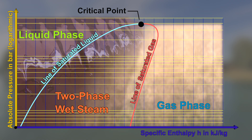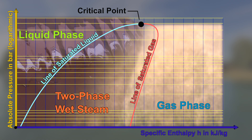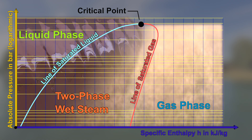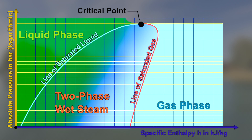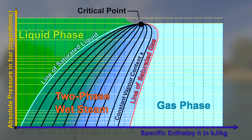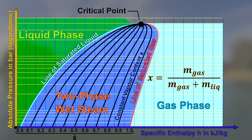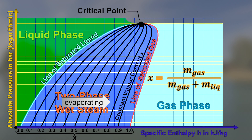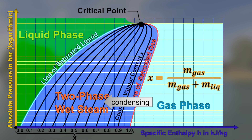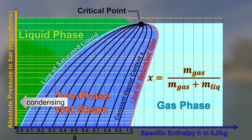If the fluid consists of a single component, the state in this domain is a mixture of a saturated liquid and a saturated gas in thermodynamic equilibrium with each other. In the left part, most of the fluid is liquid and only a small amount is gaseous. In the right part, most of the fluid is gaseous and only a small amount is liquid. Lines of constant vapor content x are indicated in the two-phase area. The vapor content x is the mass ratio of the gaseous fluid and is also called quality. If a state moves from left to right in the two-phase domain, the quality x increases from zero to one and the fluid is evaporating. If a state moves from right to left, the quality x decreases from one to zero and the fluid is condensing.